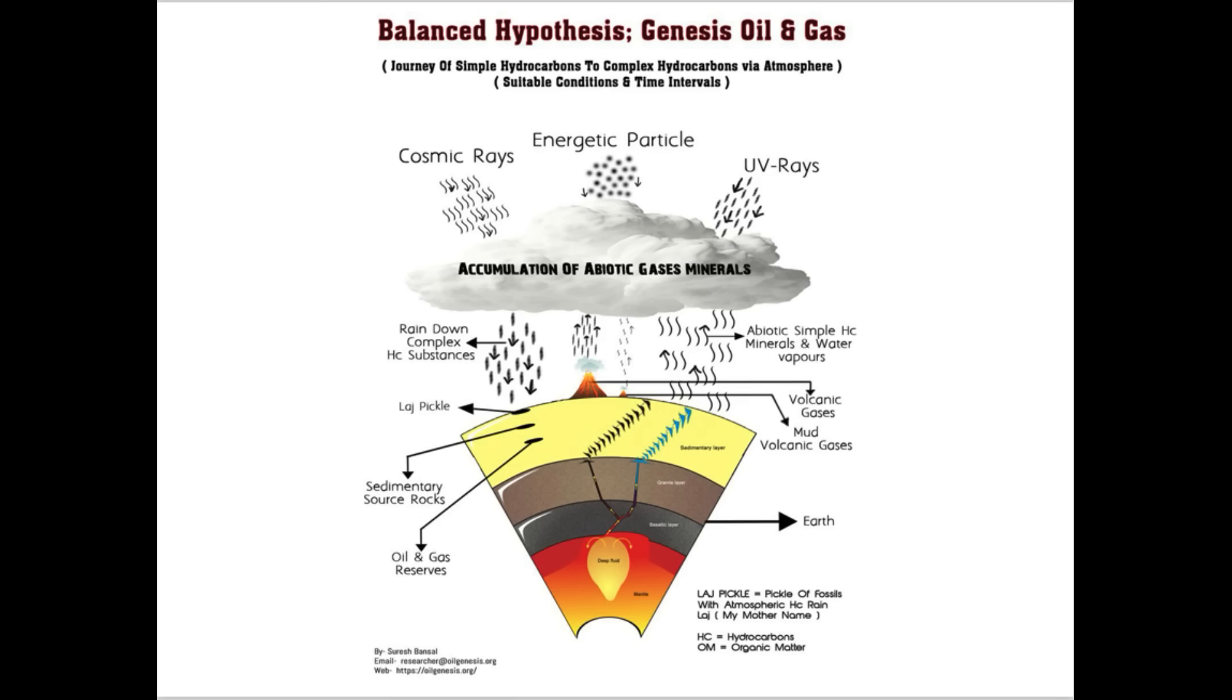Evidences denying the current fossil fuel theory. First one is misbalance of input and output. There is insufficient biological material to account for fossil fuel reserves. See Kucherov, 2013. The next one is well-preserved fossils. They contradict thermal degradation expectations, supporting pre-generated abiotic hydrocarbons that kept well-preserved and mummified these fossils.